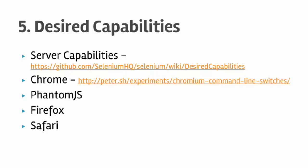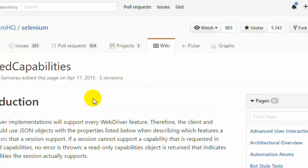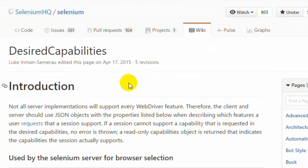We will start with this URL — GitHub SeleniumHQ Selenium wiki desired capabilities — where all the information regarding capabilities and their significance is documented. Before we jump into that, let me explain what desired capabilities are. The desired capabilities allow you to launch the browser with a different configuration.